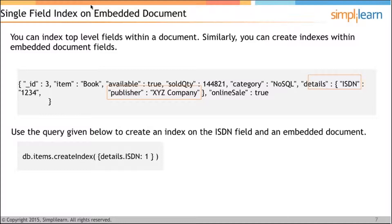For a single field index on an embedded document, we can index top-level fields within a document, and similarly create indexes within embedded document fields. For example, consider a document with ID 3, item as book, available as true, a category of NoSQL, and an embedded details document containing ISBN 1234 and publisher XYZ company. We can create an index specifically on that embedded field using a dot operator: DB.items.createIndex({'details.ISBN': 1}).